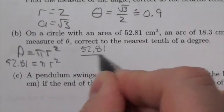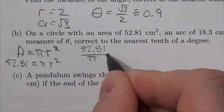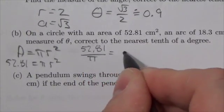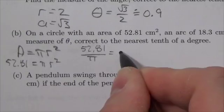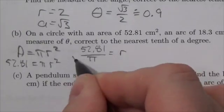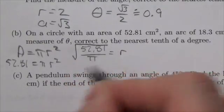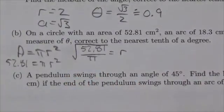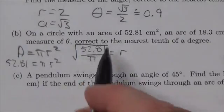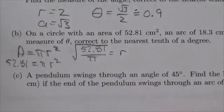52.81 divided by π is going to get me r², and so r is going to equal the square root of that. I'll come back to that in just a little bit, because I'll probably end up just entering it like that into the calculator.